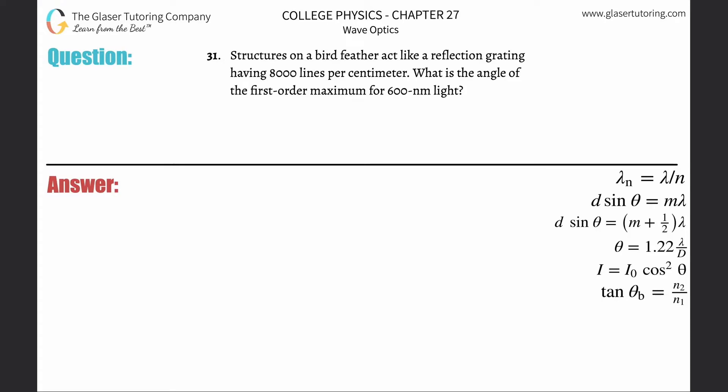Number 31, structures on a bird feather act like a reflection grating having 8,000 lines per centimeter. What is the angle of the first order maximum for 600 nanometer light?